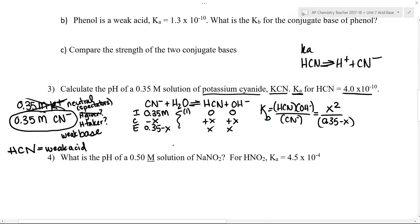But since CN minus and HCN are a conjugate acid-base pair, I can use this relationship that Ka times Kb equals Kw. So I can figure out what the Kb is of this reaction by rearranging this equation and saying Kb is Kw divided by Ka.